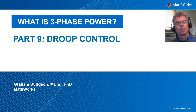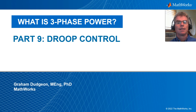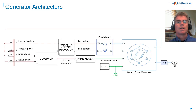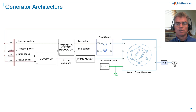Hello everyone, my name is Graham Dudgeon and welcome to part 9 in a series of tutorials on three-phase power. The aim of the video series is to build up our engineering knowledge on the design, analysis, and operation of three-phase electrical power systems. Today I will discuss droop control. I'll begin by showing all the elements of a closed-loop synchronous generation system. Voltage is controlled by an automatic voltage regulator which adjusts field voltage, and frequency is controlled by a speed governor which adjusts mechanical torque. For more information or a refresher on how synchronous generators operate, please refer to part 8 in this series.